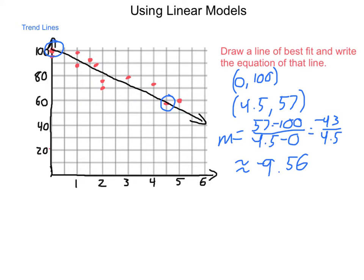Next, what is our y-intercept? Well, because it does pass through the point 0, 100, 100 is our y-intercept, and our overall equation becomes y equals negative 9.56x plus 100.